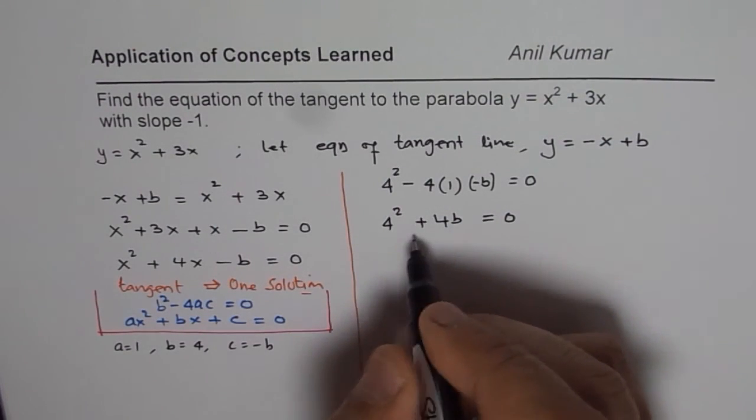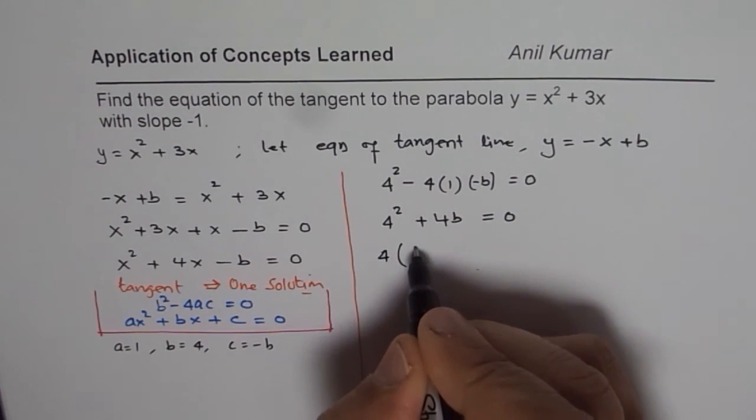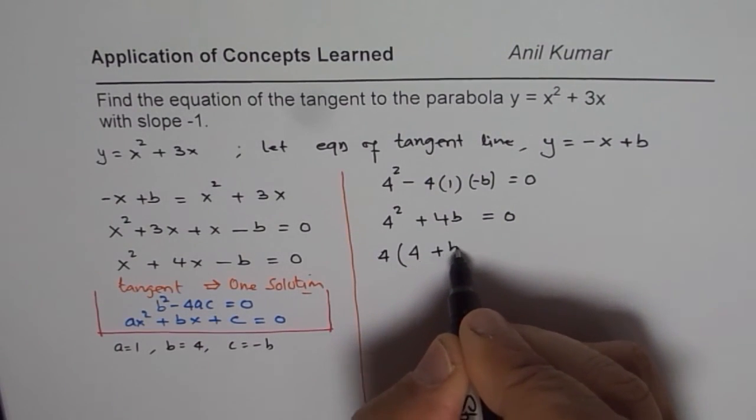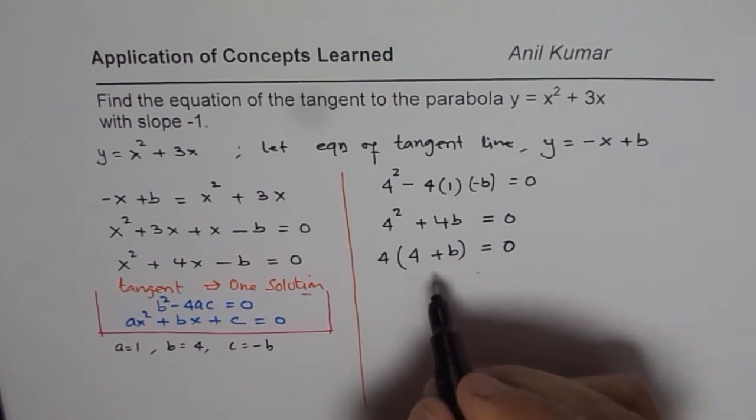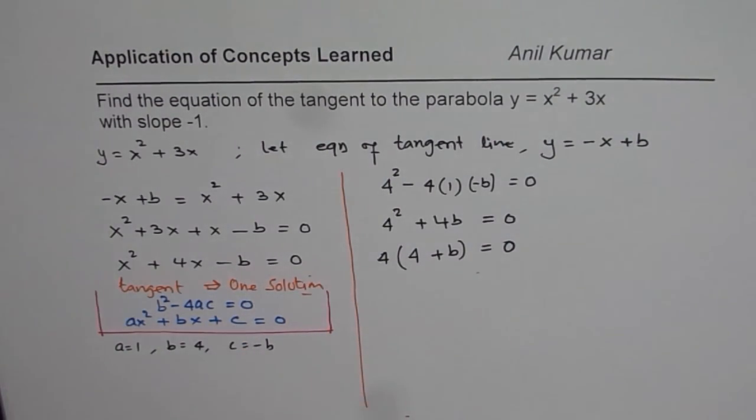So, well, you could take 4 common and you get 4 plus b equals to 0. So, that is a factoring technique which you know about, right? And this is the quadratic number of roots you have learned, correct?